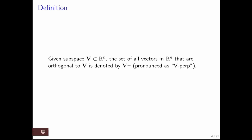Given a subspace V, we can talk about the set of all vectors in R^n that are orthogonal to V. We're going to denote that set with V perpendicular, V perp.